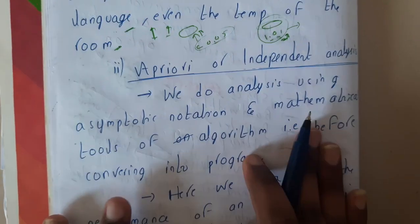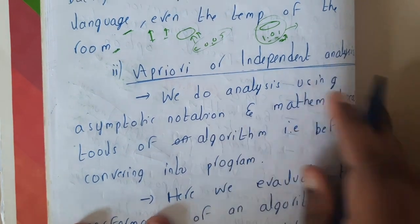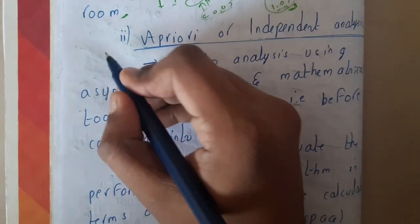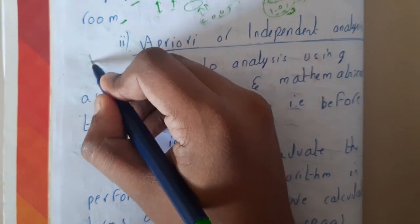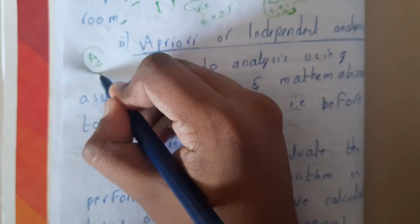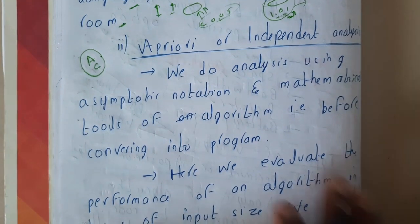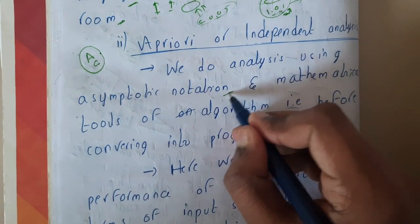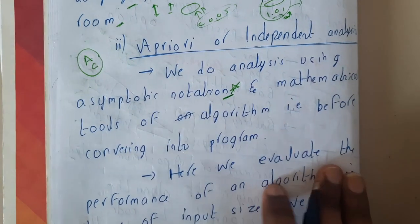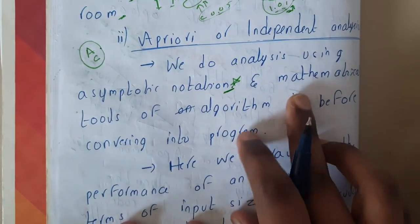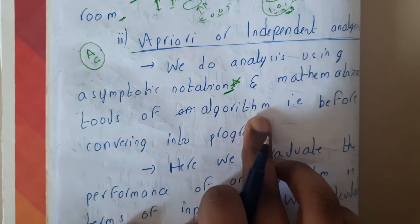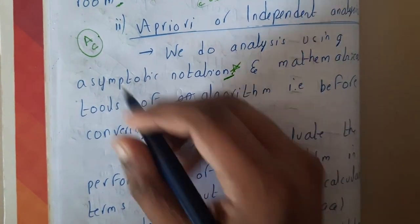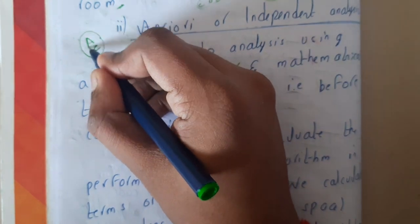Now let us go through A Priori or independent analysis. This is what is really important. Here, I told you we will be first analyzing it and then we will be writing or converting it into a code. We do analysis using the asymptotic notation - we will be discussing about this, these are really important guys, we will be discussing in our future lectures - and mathematical tools of algorithms, that is before converting it to the program. Before converting it into the code, we will be doing the analysis.